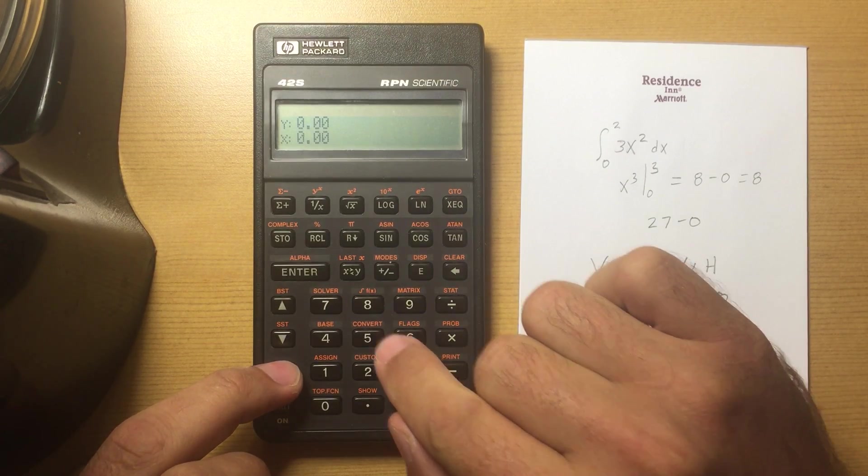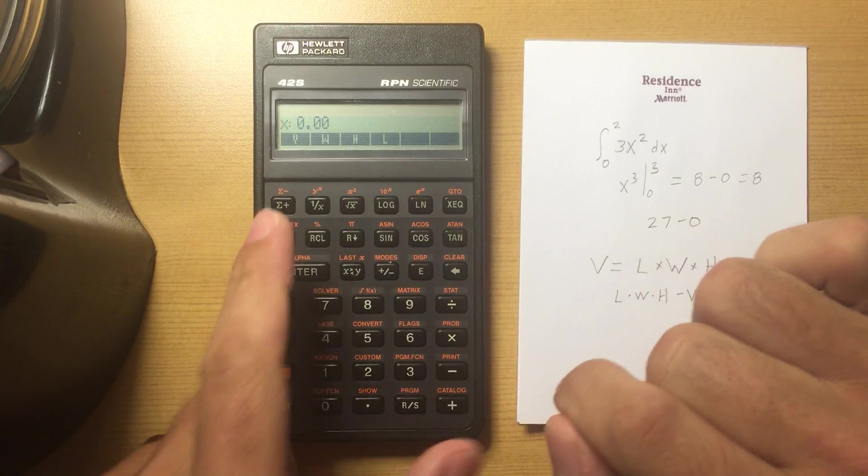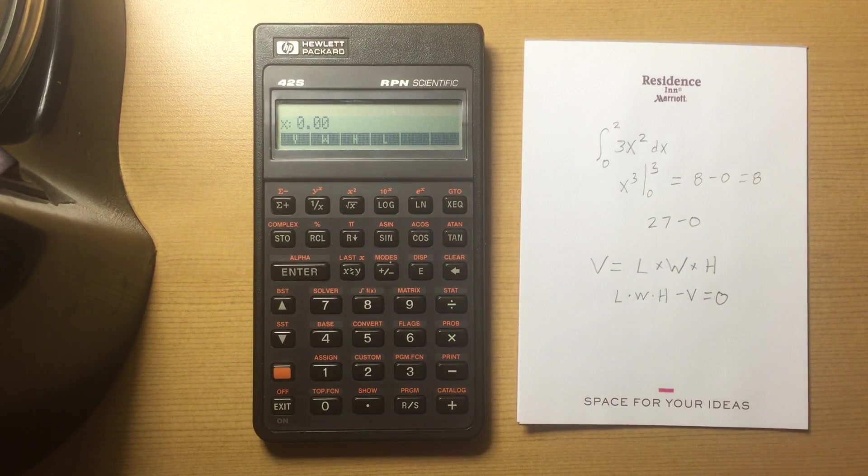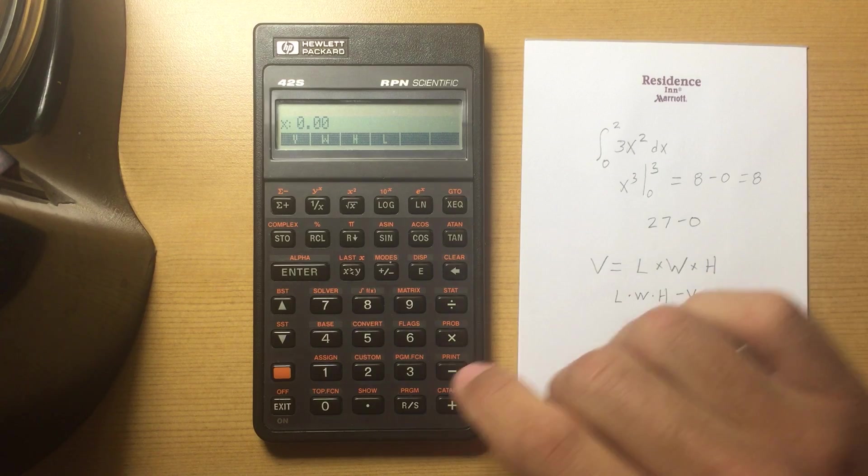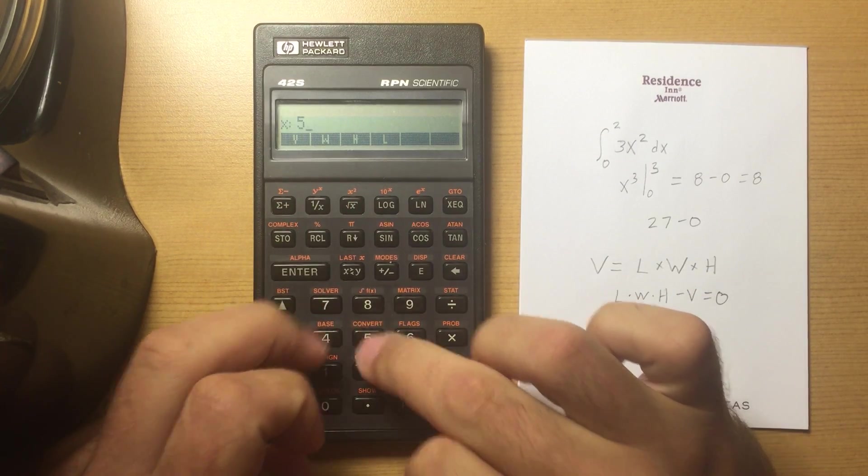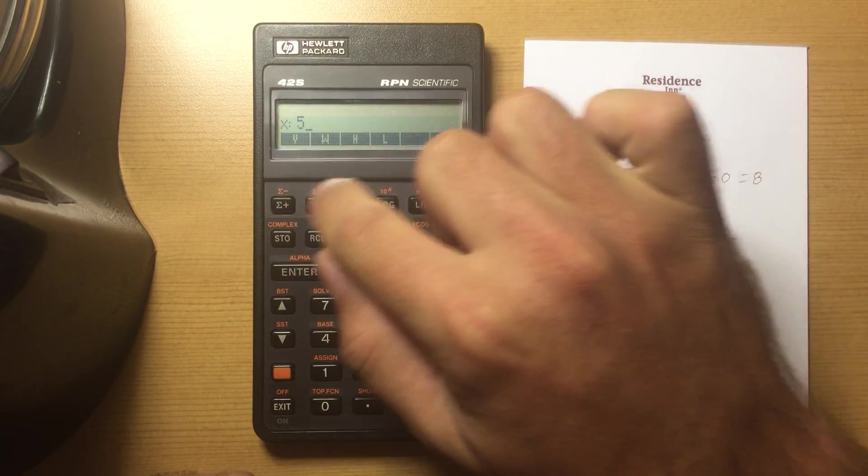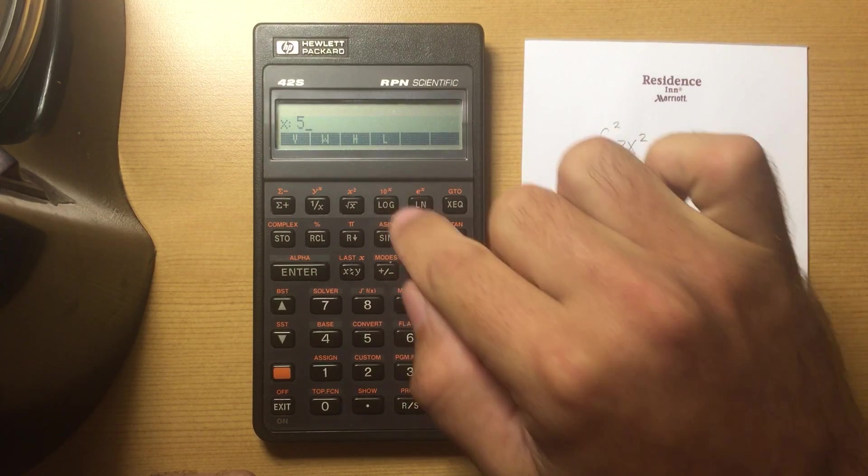Let's go ahead and solve it. Solve volume, and then we enter our knowns and solve for the unknown. Say our width is 5, our height is 5. I'm just hitting 5 and entering it—there's no equals here, I just put 5 in and enter it.